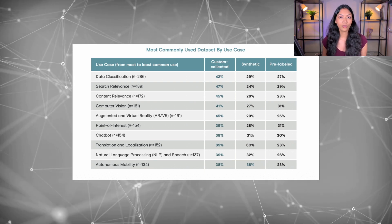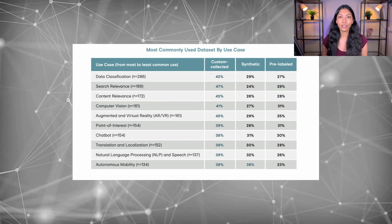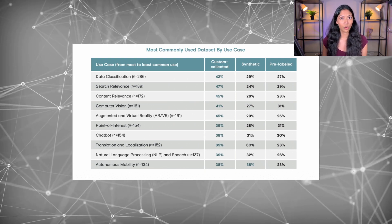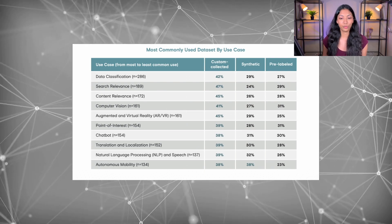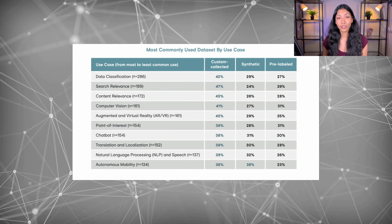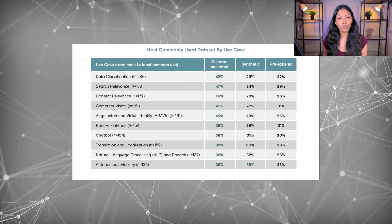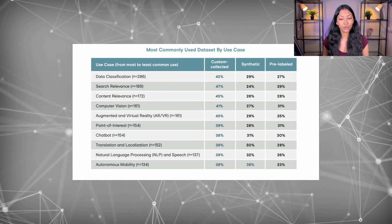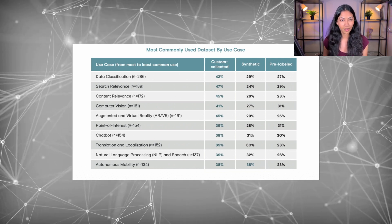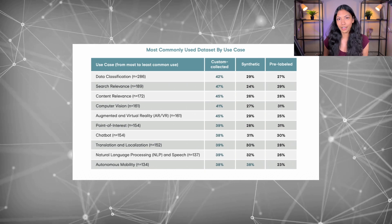Search relevance refers to using machine learning even within Google search to rank searches, as well as content relevance. These are very important. On the right side of this table you can also see the type of data which is used for each use case. You can see that the majority of data used is custom collected data, but the second type is actually synthetic data.